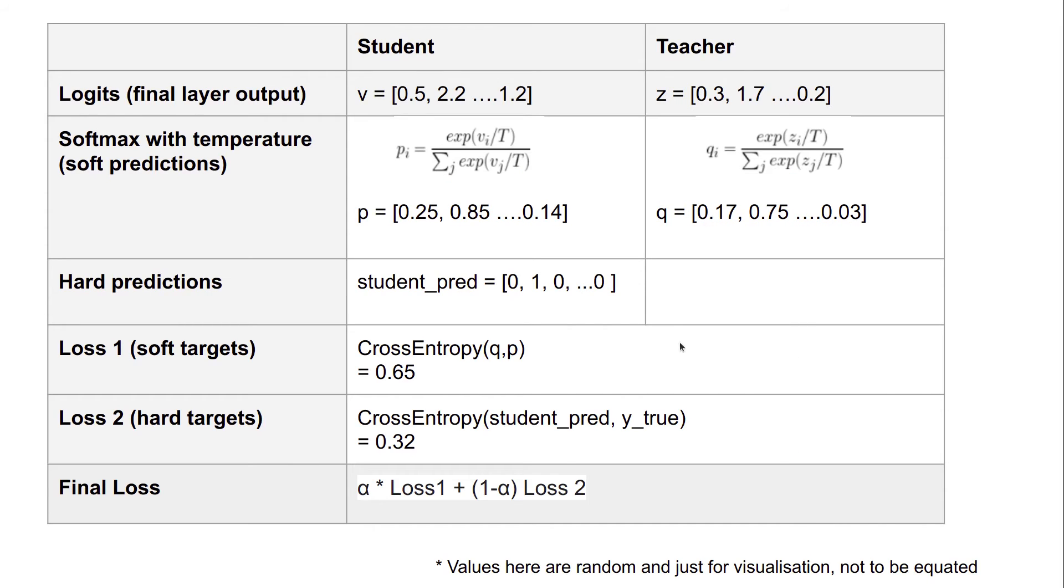So let's see how this loss is calculated which is used to train the student model. We have the logits for the student and logits for the teacher. Logits are the final layer output values which are expressed in this form of a vector. So we have V for student, Z for teacher. We take the softmax with temperature formula and then we apply this vector on this softmax to get P and Q vectors. Once we get these values, we also take the hard prediction.